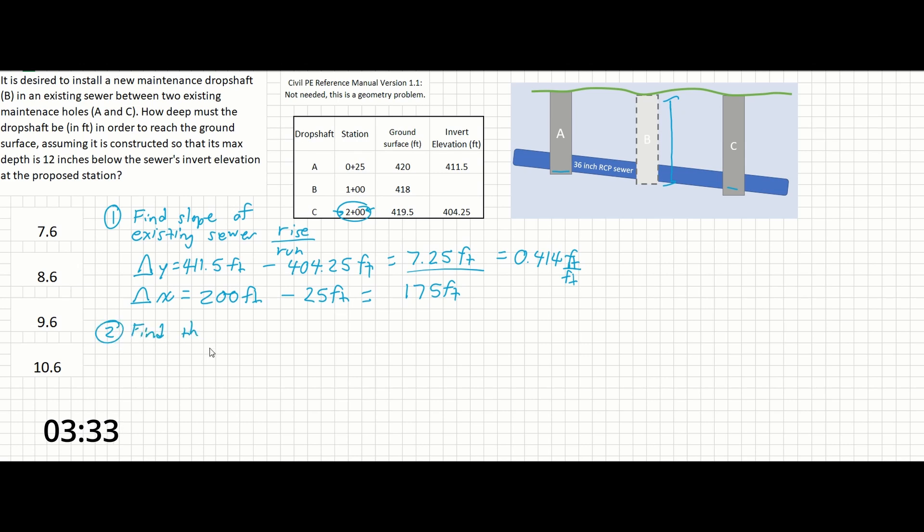Step 2 is going to be to find the invert elevation at the new station B. And that's because Y equals MX, our old slope-intercept form here, technically plus B, but there is no B component in this problem. So we're finding the invert elevation at B here. We know the slope, and we know the difference in distance between these two points.